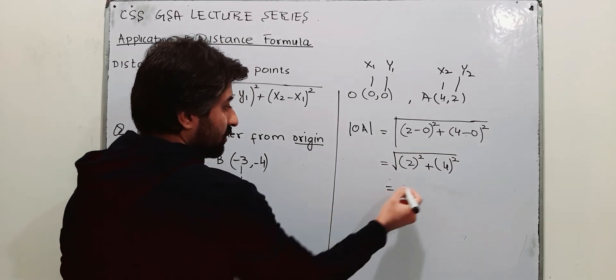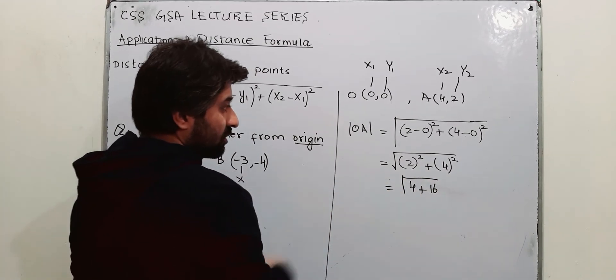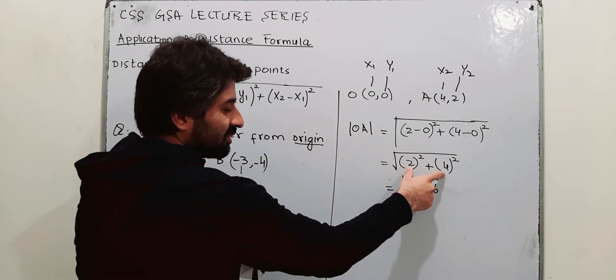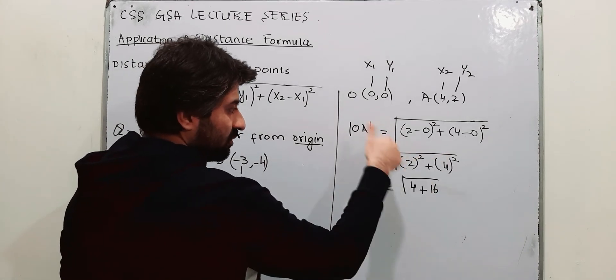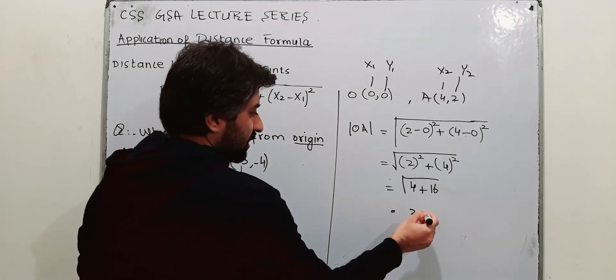So 2 square is 4, 4 square is 16. Now don't cut this square and square root. First of all you need to complete the operation. This operation is to be performed first and then you are going to take square root. That is 20, square root of 20.